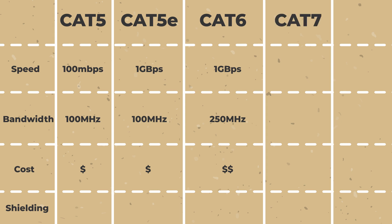CAT 7 offers data rates of up to 10 gigabits per second at a 600 megahertz bandwidth capacity, and has a moderate price point.